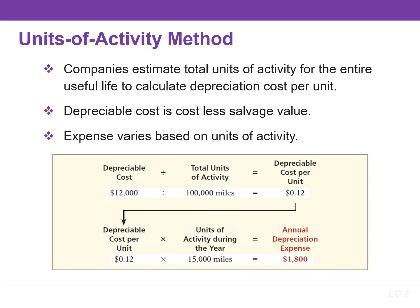If this company drives the truck 15,000 miles in the first year, depreciation expense will be $1,800, and that is found by taking the depreciation cost per unit of $0.12 and multiplying that by 15,000 miles.